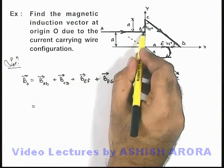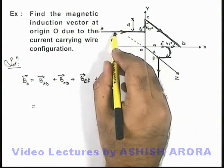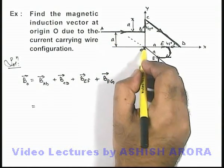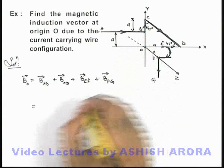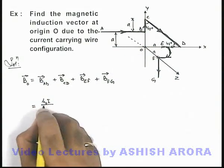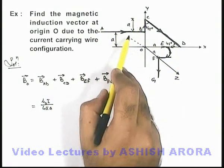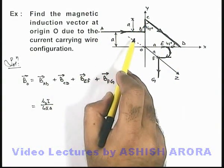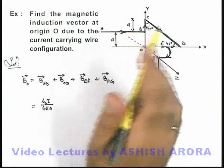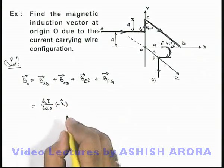Wire segment A-B is a semi-infinite wire located at a perpendicular distance 'a' from the origin. So the magnetic induction result can be written as μ₀i/4πa. Since the wire lies in the x-y plane, its magnetic induction must be in the z-direction. By the right-hand thumb rule, it is along the minus-z direction, so we multiply by the unit vector −k̂.